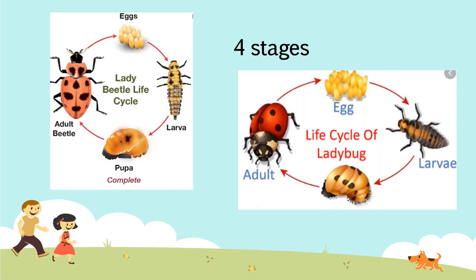These are other insects that also go through complete metamorphosis. Their life cycle has four different stages, and as you can see, they look very similar to the butterfly life cycle. The first stage is the egg. The second stage is the larva, which looks kind of like a worm.